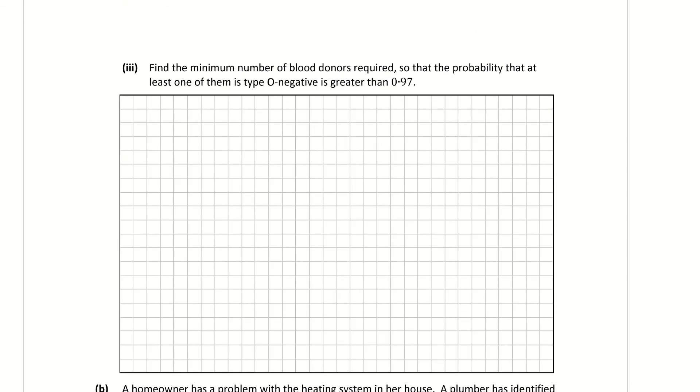Part 3 to that question is using similar information. It wants us to find the minimum number of blood donors required so that the probability that at least one of them is O negative is greater than 0.97. So if you want to scroll back up there or rewind to part 2, you'll notice that it took 5 donors gave us roughly 0.34%. So I'm basically using the same piece of information. I'm going, because it says at least one of them, so that's my 1 minus, my 92 over 100. But what I don't know this time is the power. I don't know the power, and that's what I need to find.